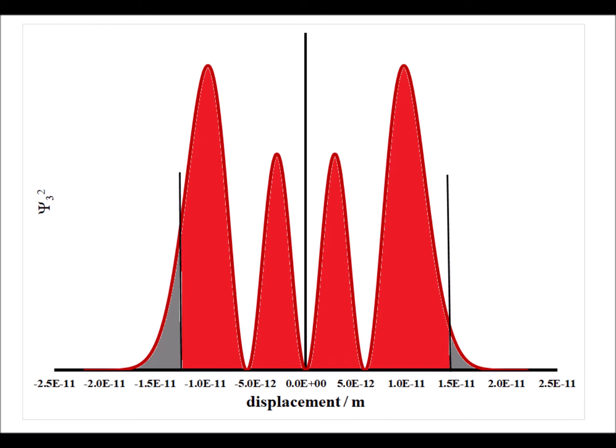Here for the n equals three state, we see the forbidden region shaded in gray, and the allowed region shown in red, and the probabilities are proportional to the areas, the integrals under these curves.